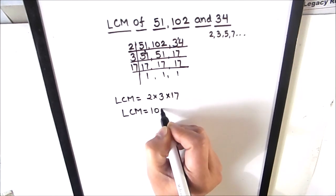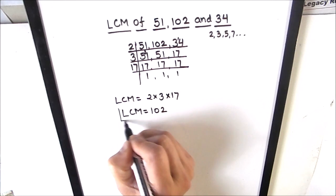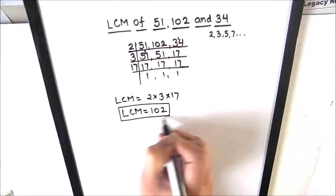Which is equal to 2 times 3 is 6, 6 times 17 is 102. So the LCM of the three numbers is 102.